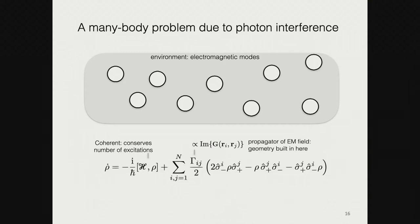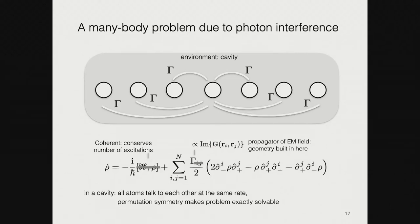In a cavity resonant with the atoms, the Hamiltonian switches off and atoms talk to each other at the same rate, simplifying the couplings — we are back in the permutation-symmetric subspace that makes the problem exactly solvable. In free space or a waveguide, a given atom talks to different neighbors at different rates, so interactions depend on interatomic separation and symmetry is broken. To deal with this, we focus on the dissipative part of the evolution and understand it in terms of collective modes: we build the coupling between pairs of atoms as an N×N matrix, diagonalize it, and find collective modes.